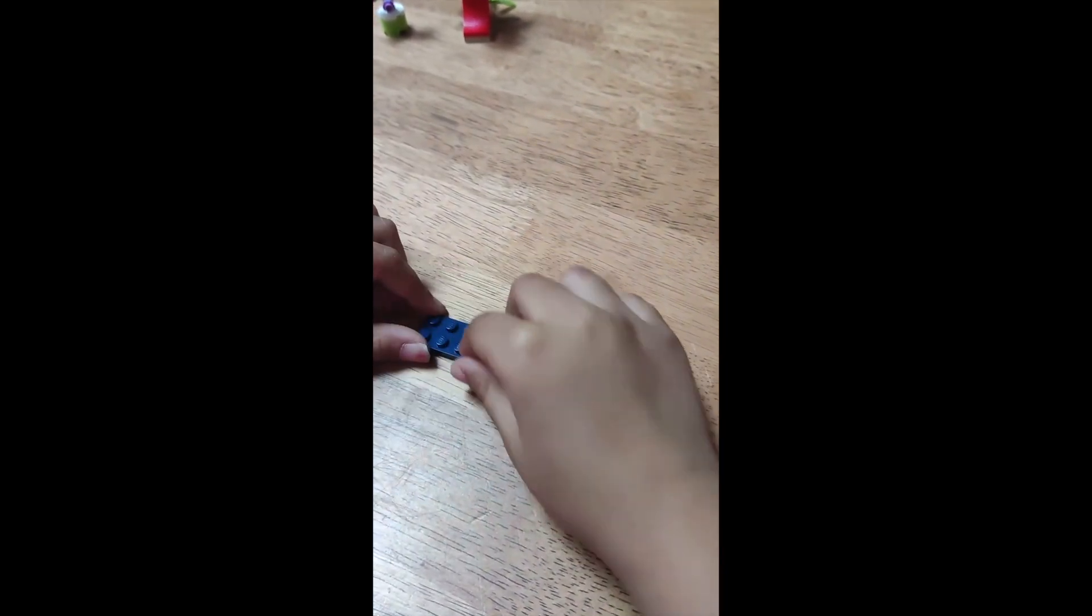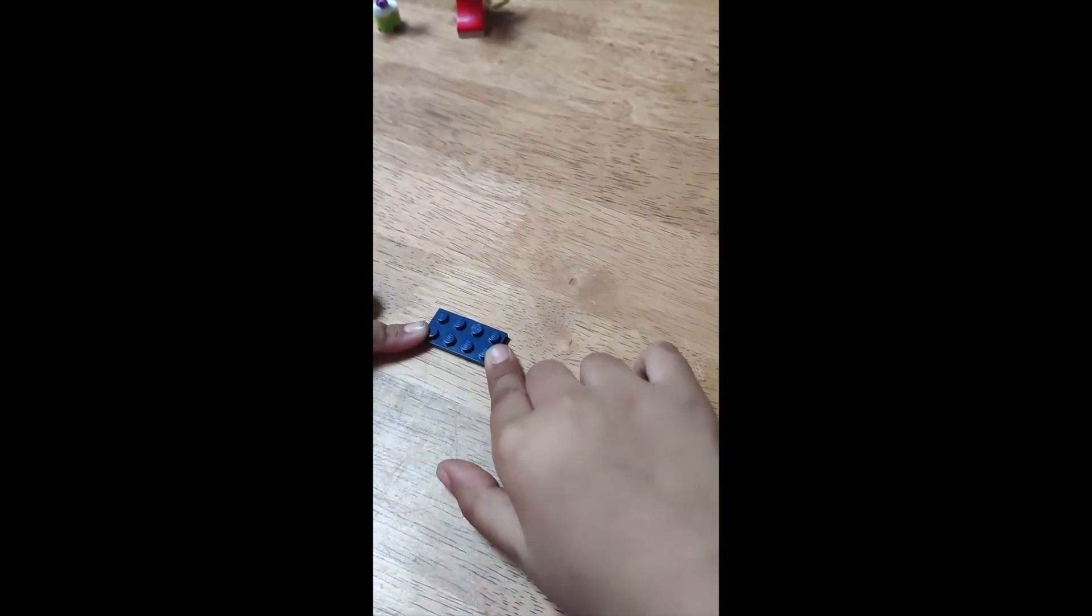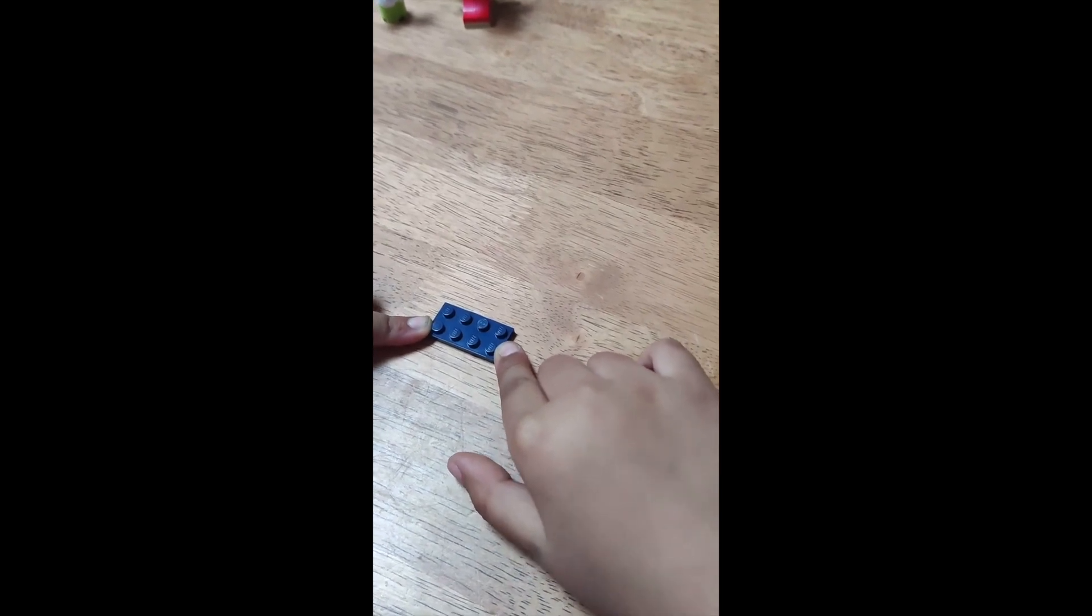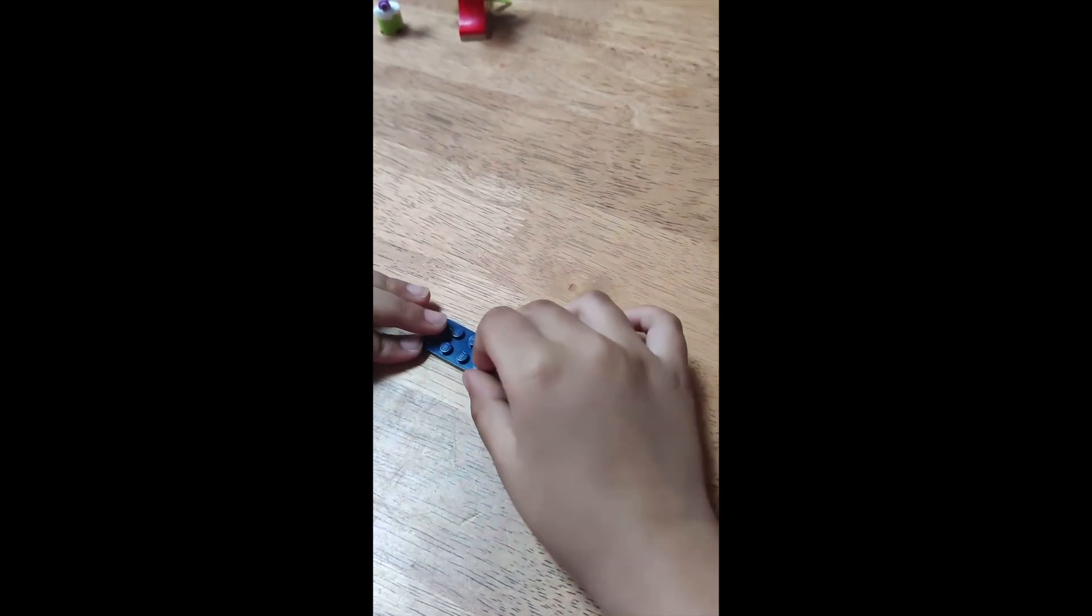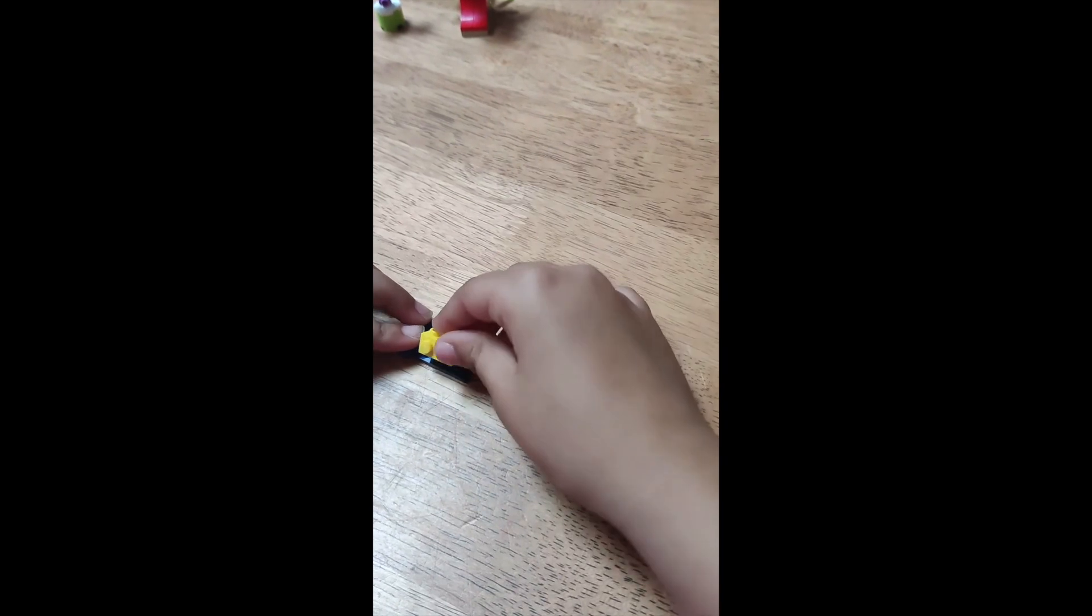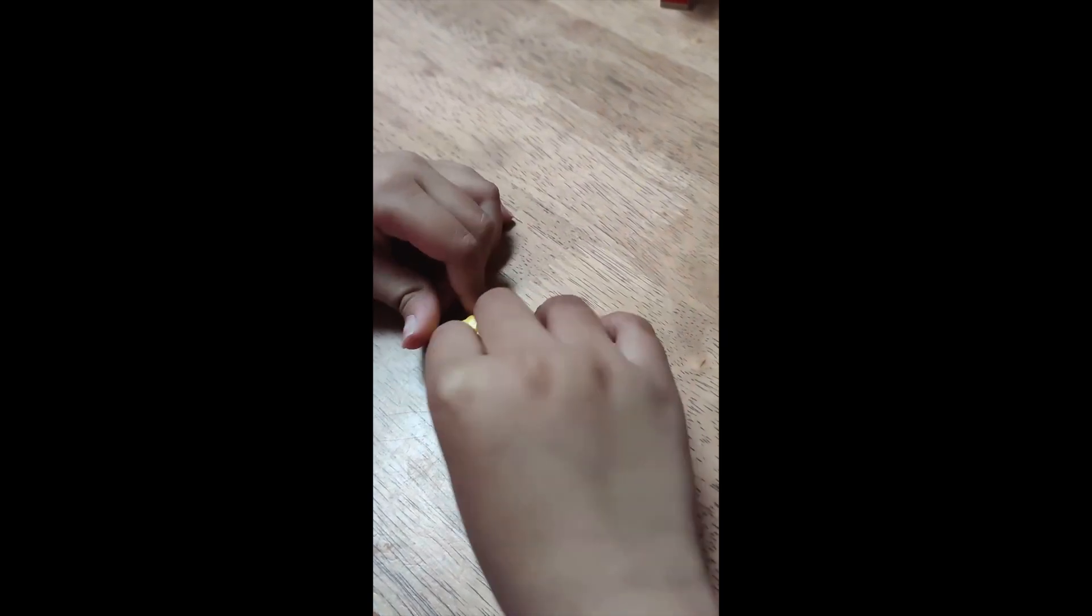Now I am going to make the submarine. First we start with this dark blue plain piece, then we put this orange print, then we put this thing, and this, and this piece on each side.